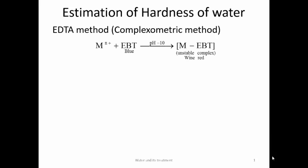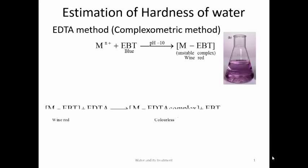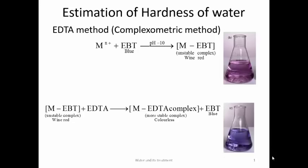In this method, we take 50 mL of hard water sample and add a buffer solution — which is a solution that resists change in pH. Then we add Eriochrome Black T (EBT), which is a blue color dye. Once EBT is added, it forms a metal-EBT unstable complex which is wine red in color. This solution is then titrated against EDTA in the burette. EDTA, being a strong ligand, replaces EBT and forms a metal-EDTA complex which is more stable and colorless. At the same time, it releases EBT dye which is blue in color. Therefore, the endpoint is wine red to blue.